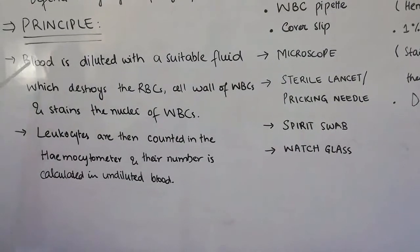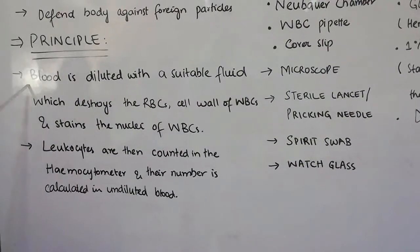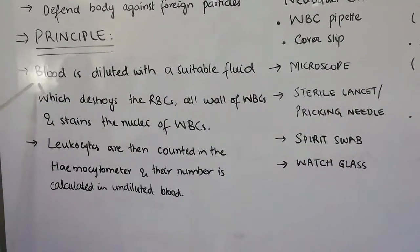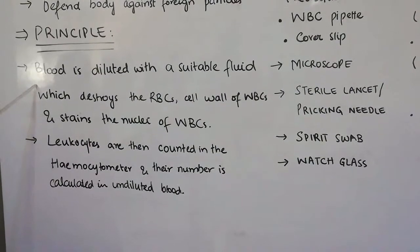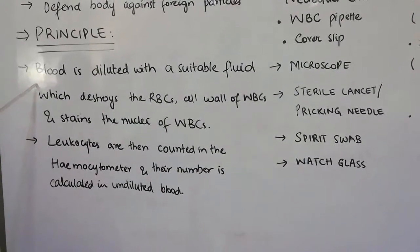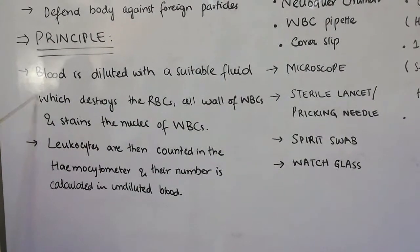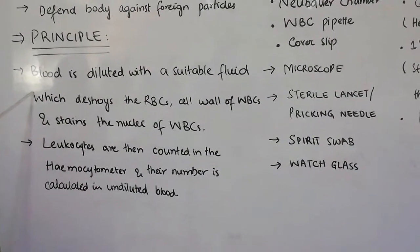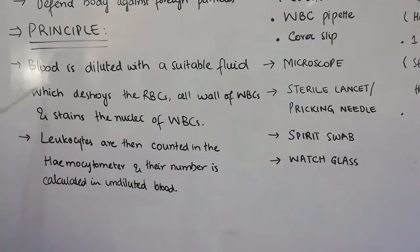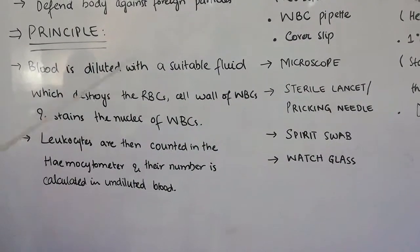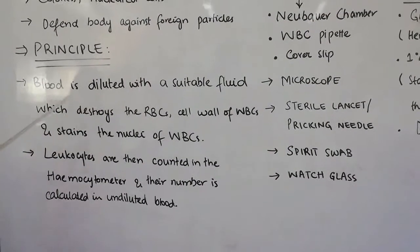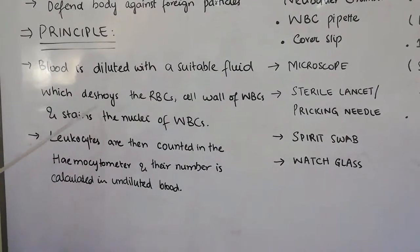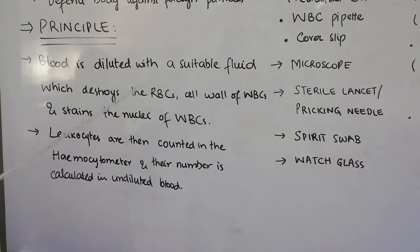The purpose of this dilution is that if we start counting the WBCs in undiluted blood in the Neubauer chamber, the cells will be so many in number that it will be impossible to count them. The second purpose is that the diluting fluid destroys the RBCs so they don't interfere in the count of WBCs.